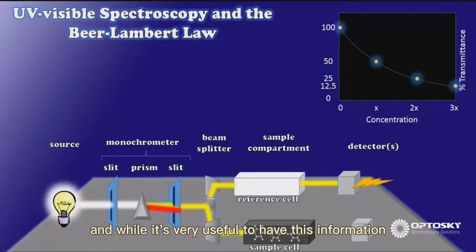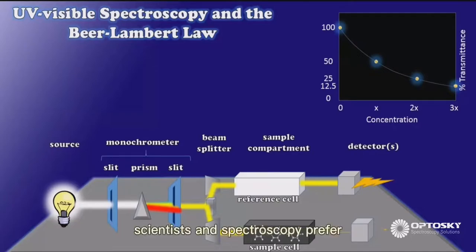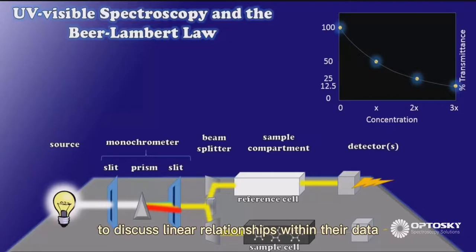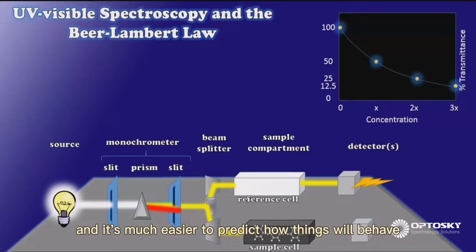And while it's very useful to have this information, scientists and spectroscopists prefer, if they can, to discuss linear relationships within their data, because this makes for a much simpler discussion, and it's much easier to predict how things will behave if we have a simple linear plot to compare.